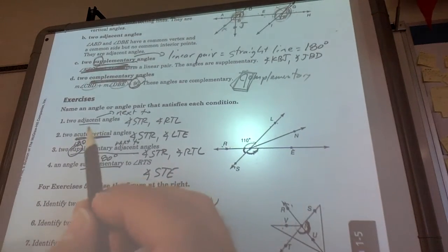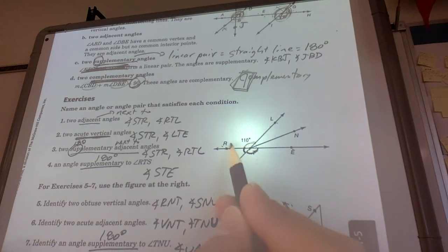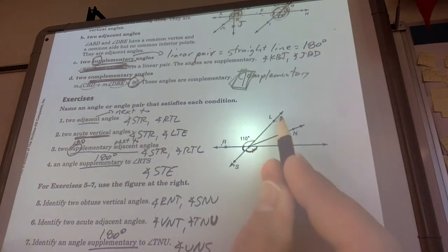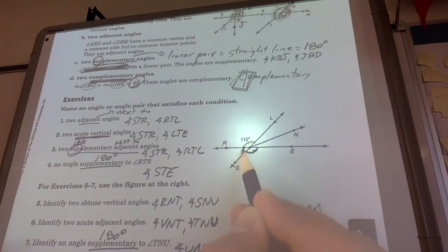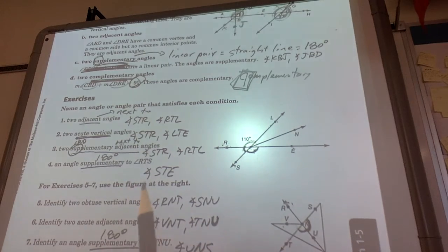Just jump down into the exercises real quick. Two adjacent angles, two angles next to each other. We picked STR and RTL. These two right here. They happen to also be supplementary. We'll get to that in a second, but they're definitely adjacent.